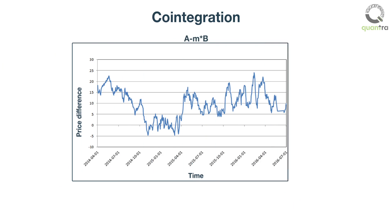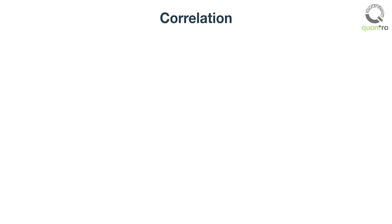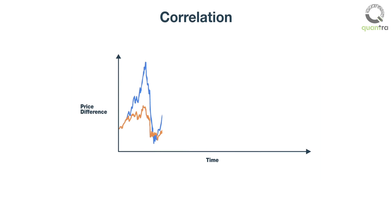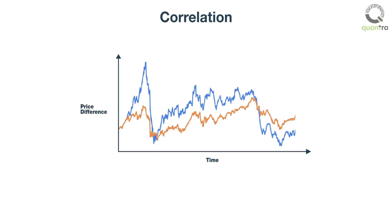In the context of trading, if the spread between two assets is stationary — that is, if the spread stays around the mean — then the prices are said to be co-integrated. On the other hand, correlated commodities are those whose prices move in the same direction but whose spread may not be stationary.